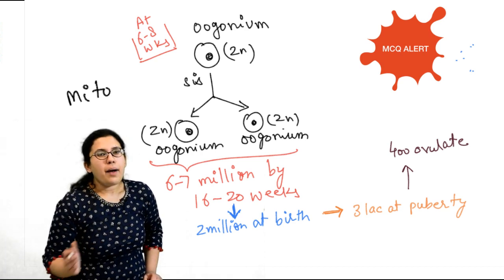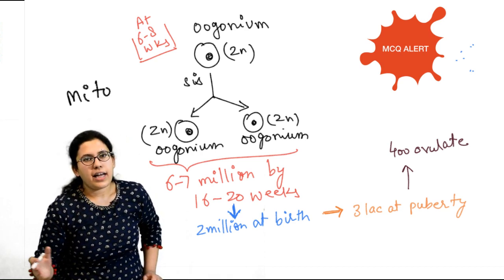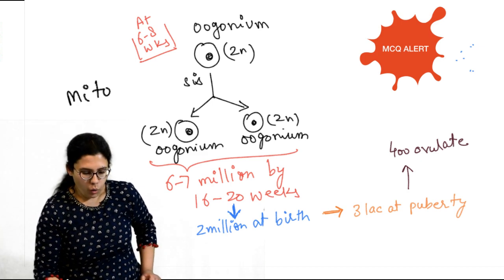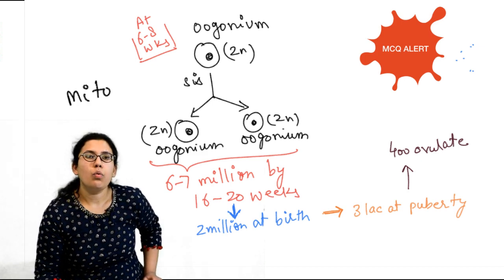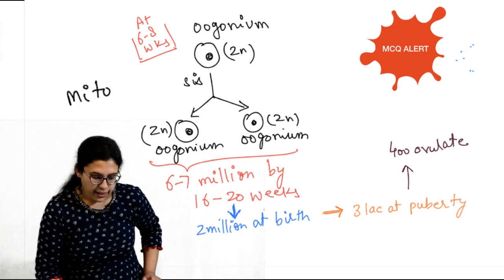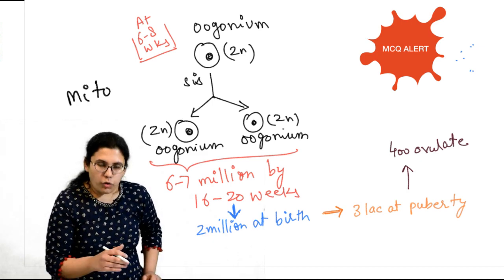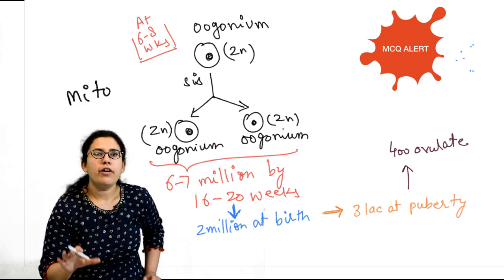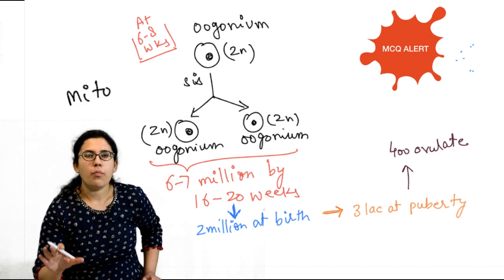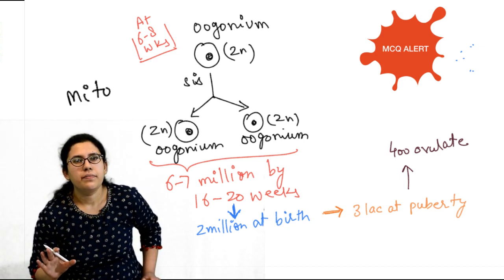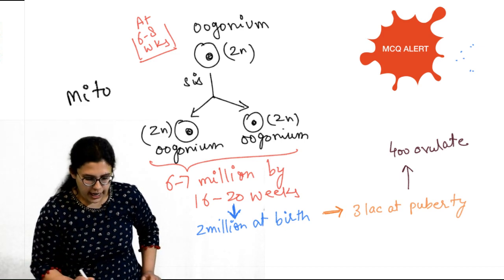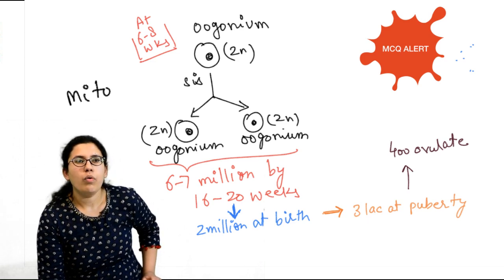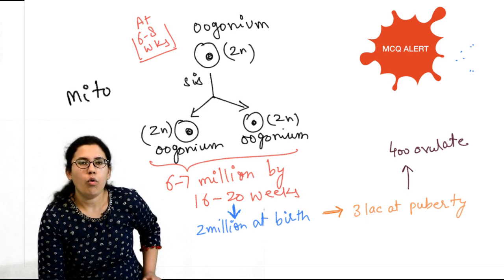So at birth the number is 2 million. By the time a girl hits puberty, only 3 lakh oogonia are left. Out of these 3 lakh, only 400 ovulate during the entire reproductive years of a female.